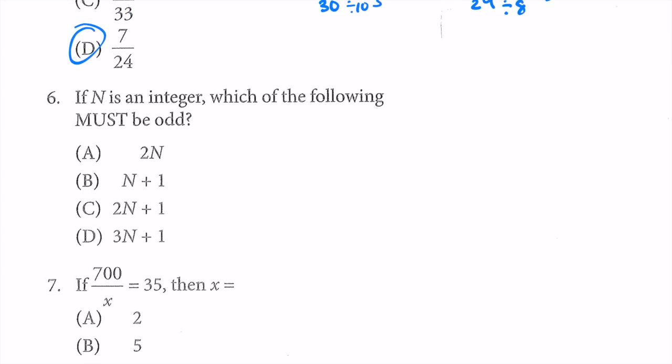Question 6: if n is an integer, which of the following must be odd? An integer is like 1, 2, 3, 4... including 0. Let's give n two different values to prove it — n = 5 (odd) and n = 8 (even), since the question is about whether a number is odd or even. For A: 2n — 2 times 5 is 10, that's even. 2 times 8 is 16, also even. It's definitely not A.